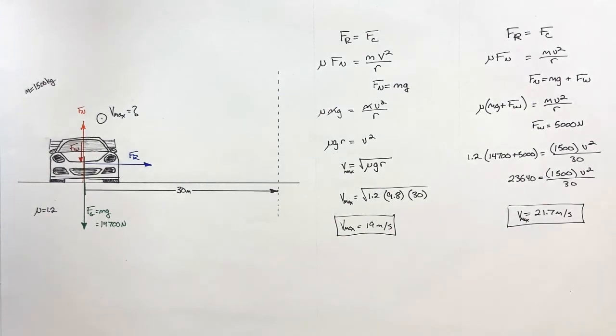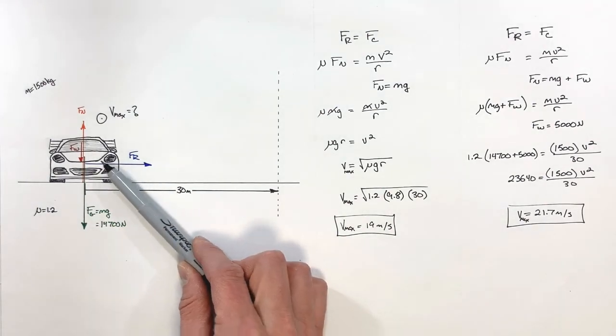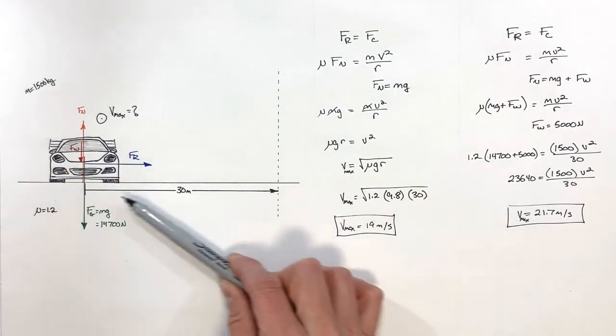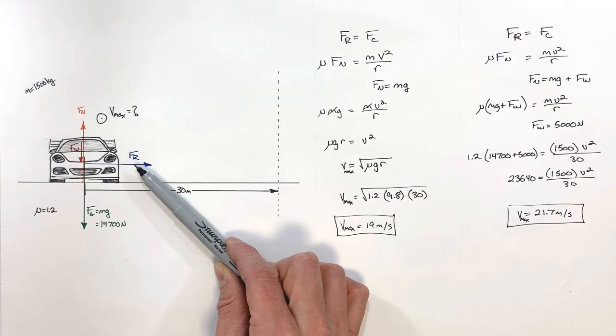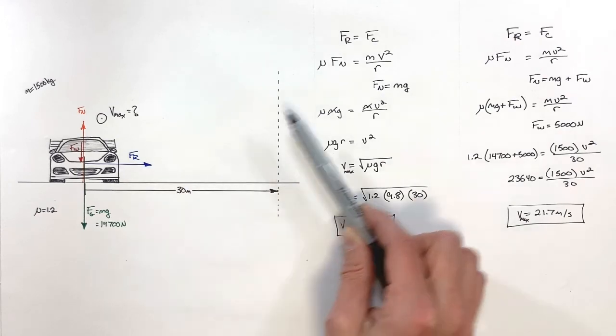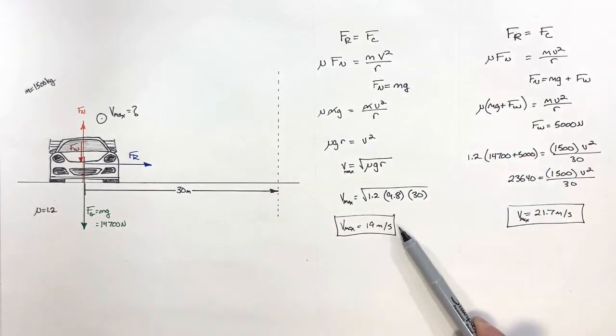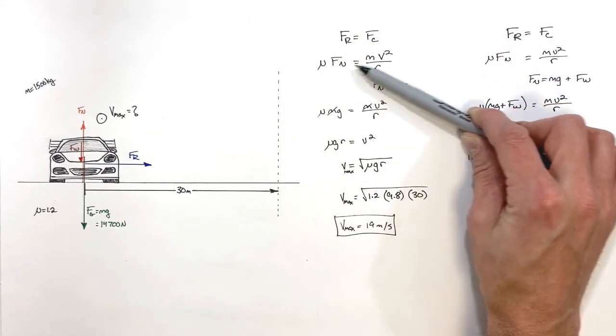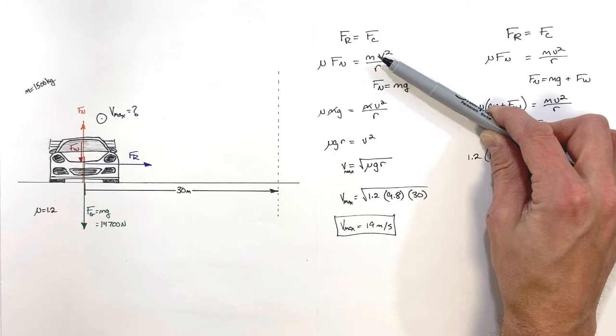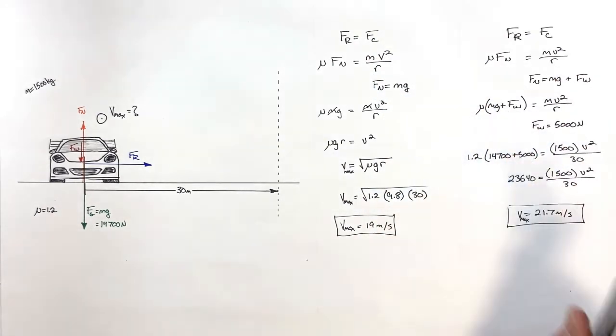So the big takeaway in this problem is that as this car goes around this horizontal corner, it is friction which is acting as the centripetal force. And because friction is acting as the centripetal force, that drives the math which we do to solve this problem. We simply set friction equal to the centripetal force, and then expand out these functions and solve for whatever it is we need.